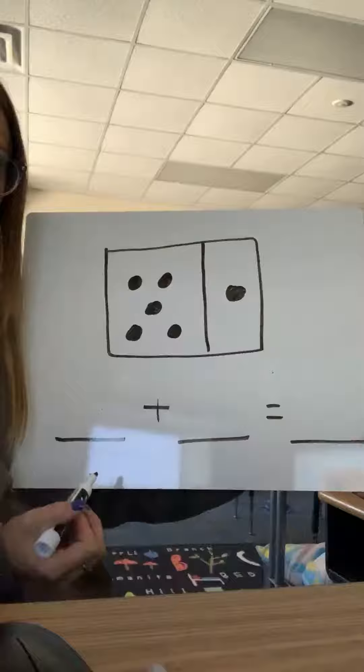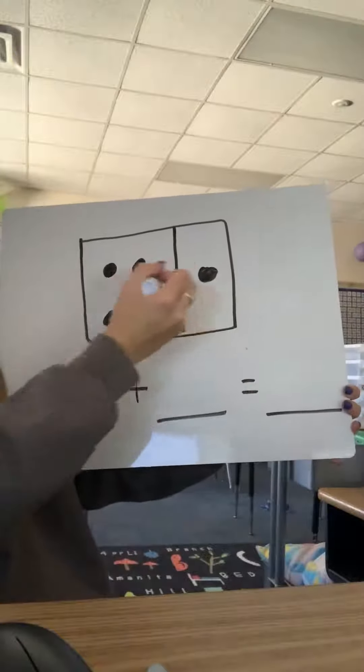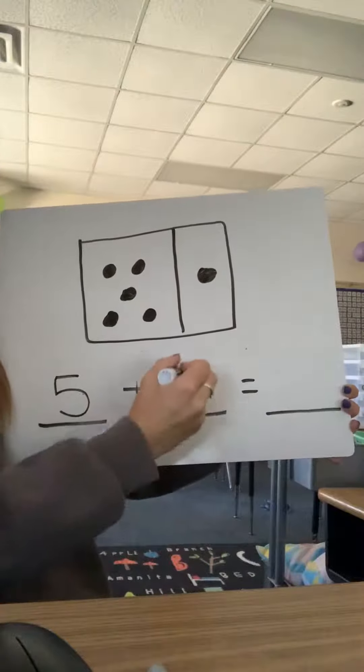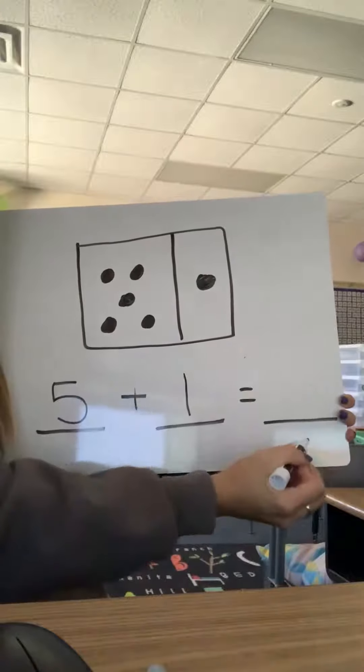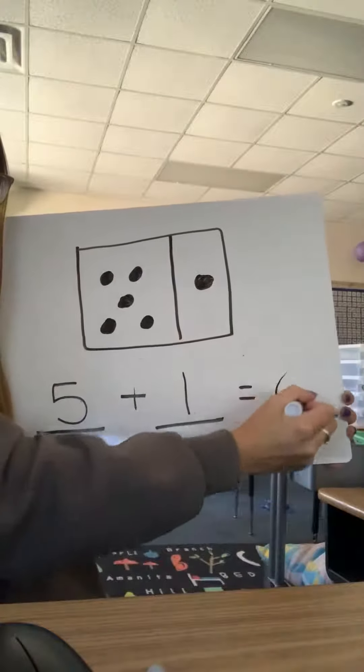When we're filling in our addition sentence, remember we need our two addends. So we have a five and a one, and then our answer goes after the equal sign, and we have six.